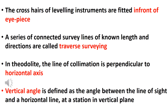The crosshairs of leveling instruments are fitted in front of the eyepiece. A series of connected survey lines of known length and directions are called traverse surveying. In theodolite, the line of collimation is perpendicular to the horizontal axis.